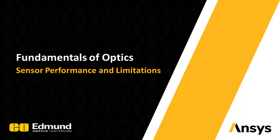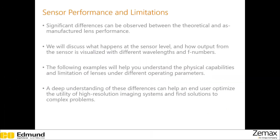In this section, we will try to learn about real-world performance of imaging systems. We will start our discussion with sensor performance and limitations. As you can imagine, things do not turn out as nicely as you expect all the time. With imaging systems, there can be significant differences between theoretical and actual lens performances. We will try to understand what happens at the sensor level and will try to demonstrate with relevant examples.